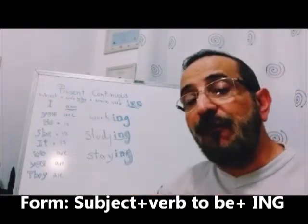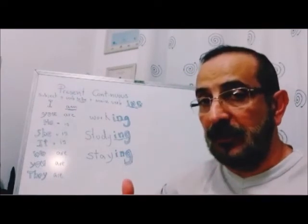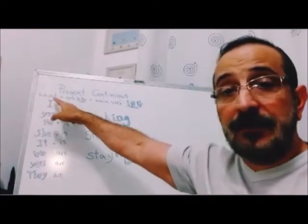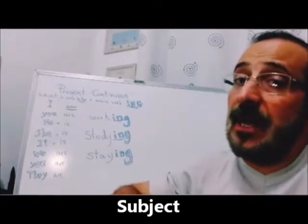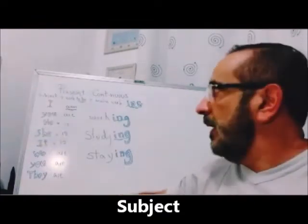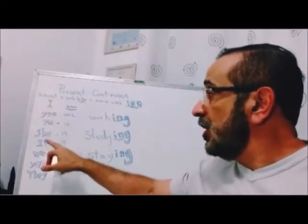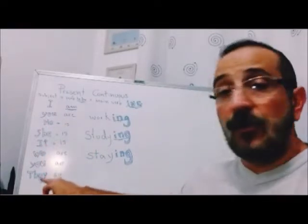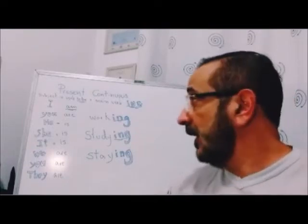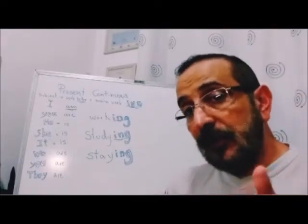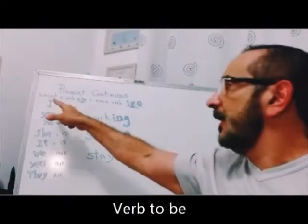How do we form the present continuous? Como nós formamos o present continuous? We need a subject. Nós vamos precisar de sujeito — pode ser Bob, Mary, John and Bob, ou I, you, he, she, it, we, you, they. They are the subject. Plus — é o sinalzinho de mais — plus verb to be.